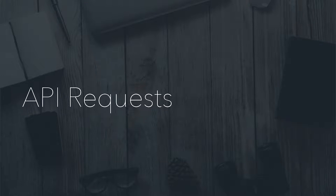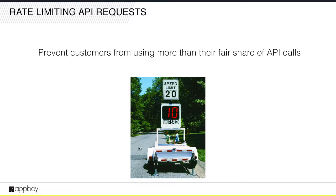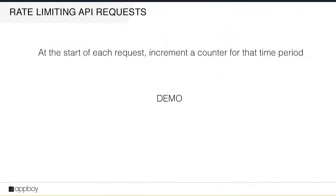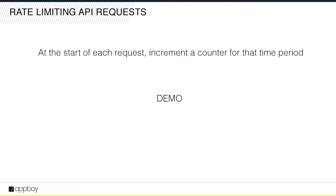The first use case is limiting API requests. Anyone who's implemented an API knows you don't want people to send an unlimited number of calls. You want to throttle them — maybe an enterprise customer gets a million API calls per hour, or a customer paying ten dollars a month only gets a thousand an hour. The goal is to avoid overwhelming your resources or having one bad actor use more than their fair share.